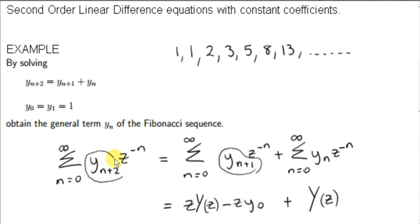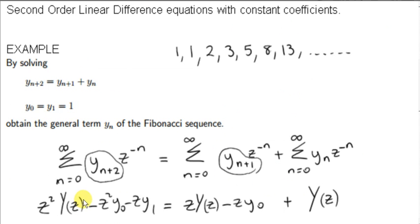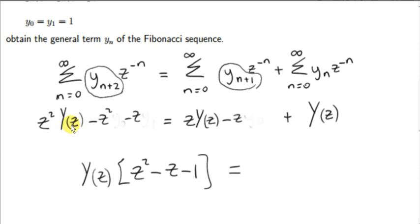What's new here is that we need to take the z-transform of y sub n plus 2, and I have that written down in this table — this is something we derived in a previous video. The next step is to fill in for y0 and y1; they're both equal to 1, so we can just erase those terms. Next, we bring all the terms involving Y(z) over to the left-hand side.